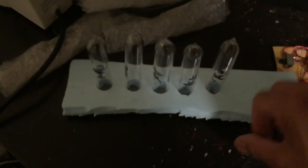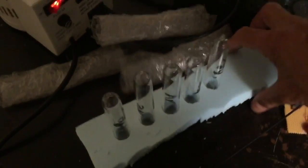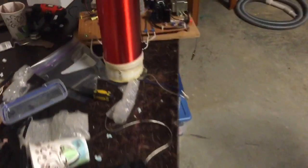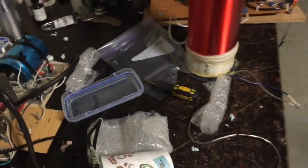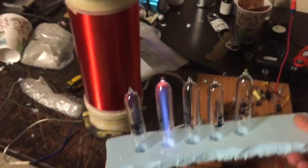So let's turn on the pulse generator. Now I've got the output from the Tesla coil and we're going to bring each one of these tubes.